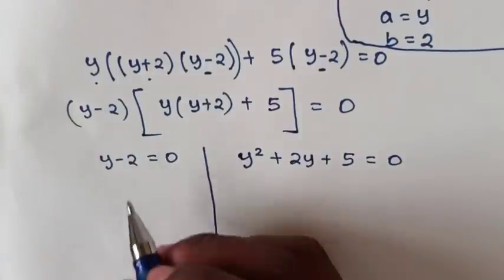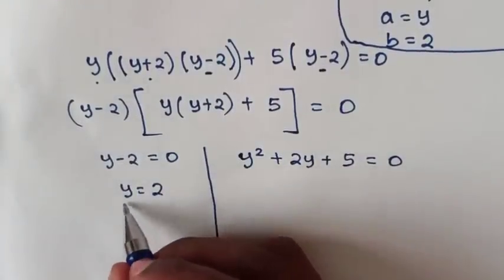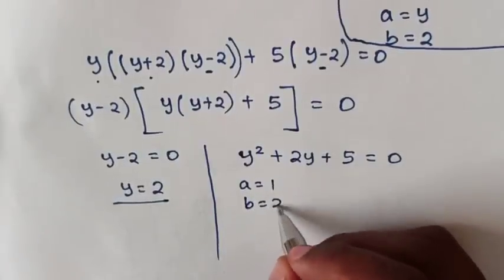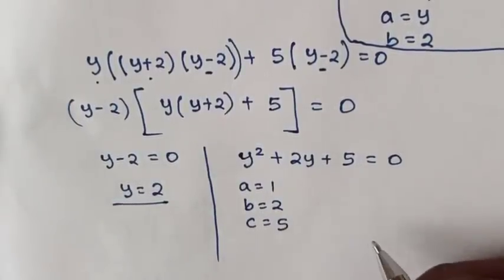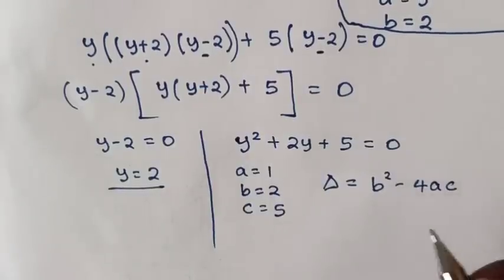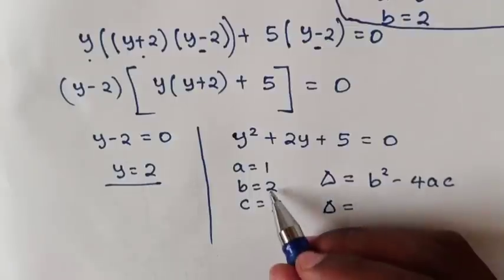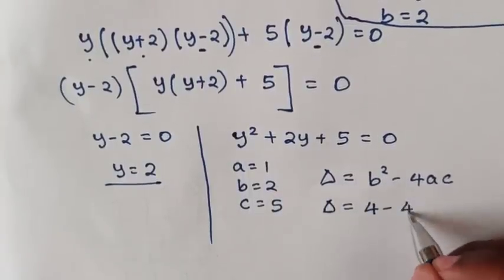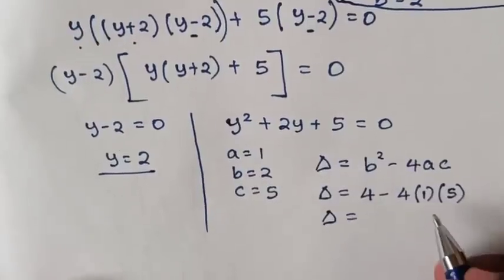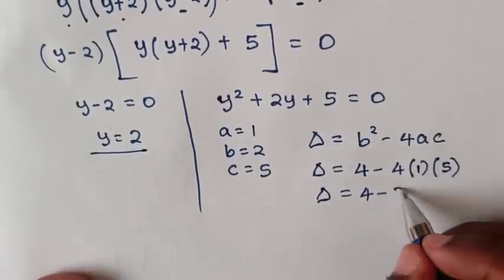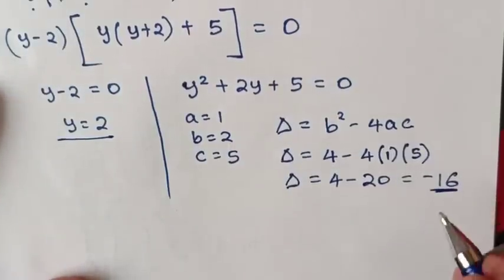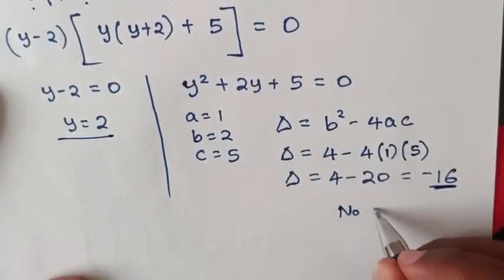From the first case, y is equal to 2. For the second case, using the discriminant formula b squared minus 4ac, where a equals 1, b equals 2, and c equals 5: discriminant equals 2 squared minus 4 times 1 times 5, which is 4 minus 20, equal to negative 16. Because the discriminant is negative, there is no real solution in this case.